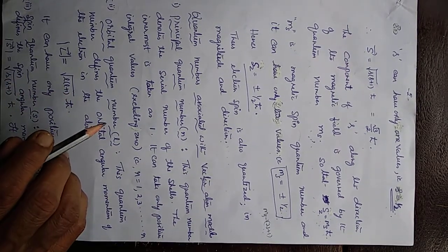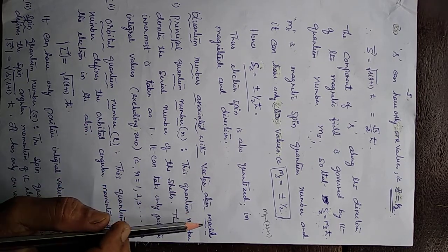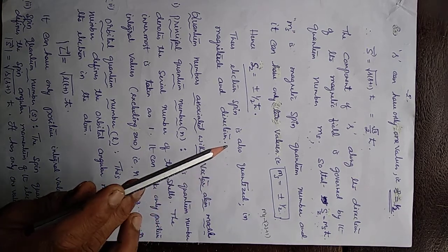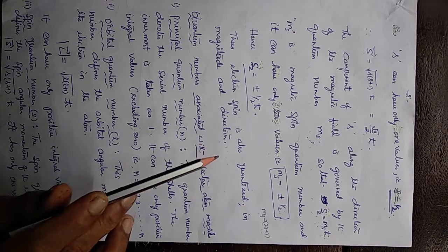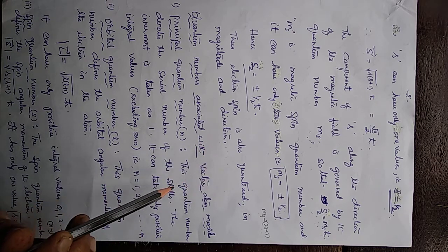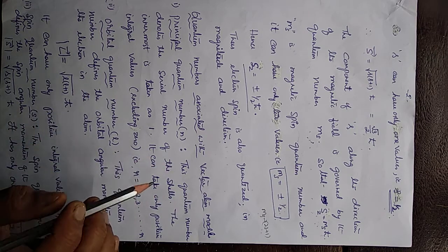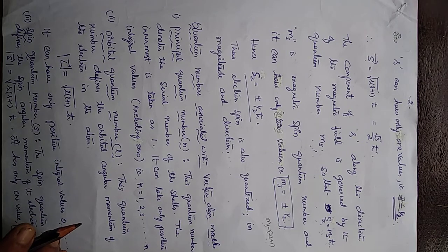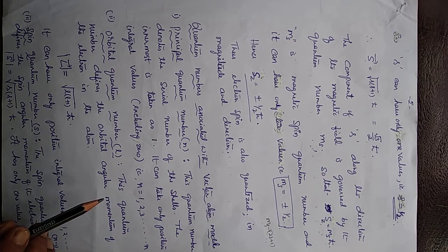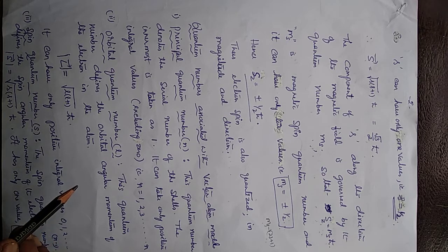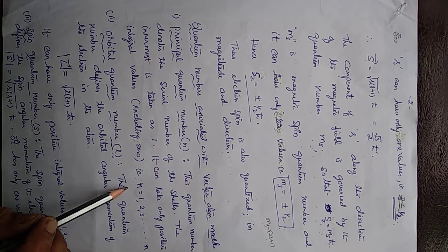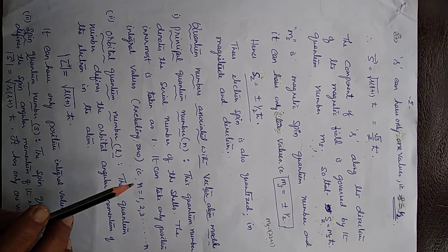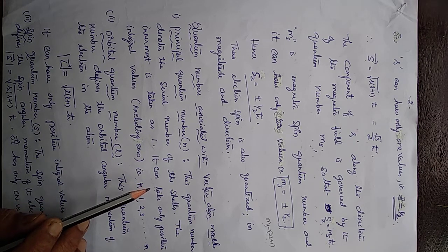Now, the quantum numbers associated with the vector atom model. This model introduced the orbital magnetic quantum number M_L and the magnetic spin quantum number M_S, along with quantum numbers from the Bohr-Sommerfeld model. The first quantum number is the principal quantum number N, which denotes the serial number of the shells. N takes values 1, 2, 3 and so on, excluding 0.